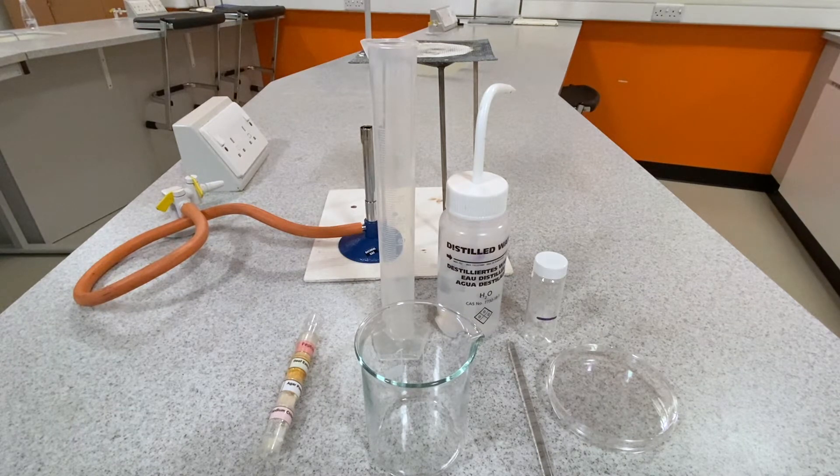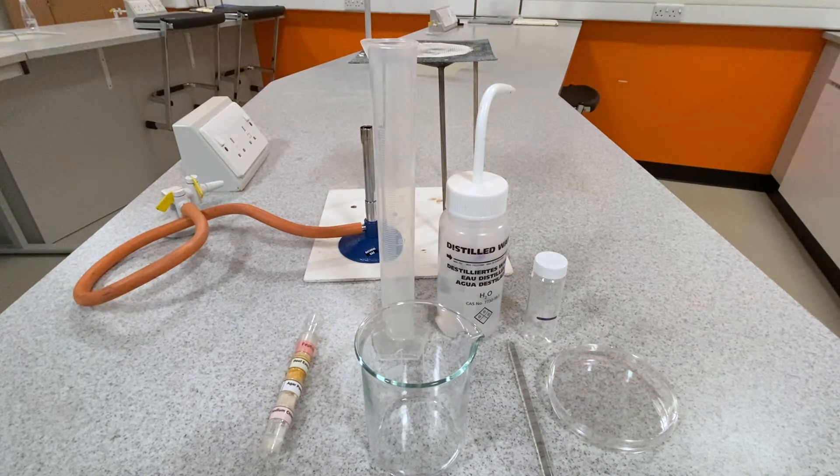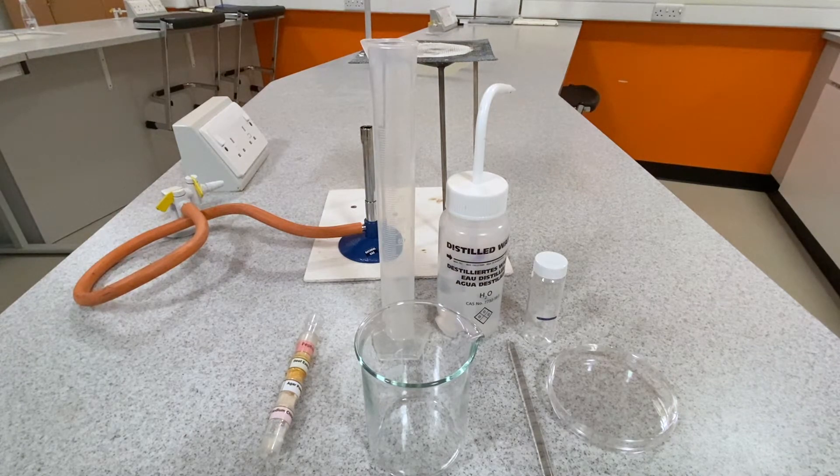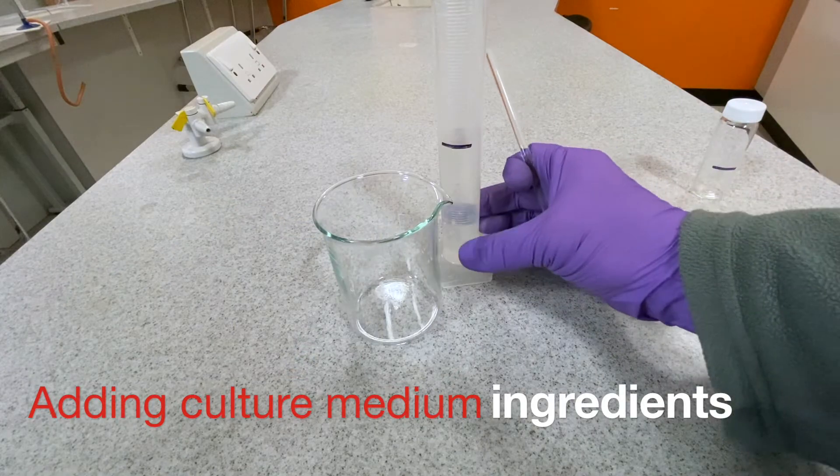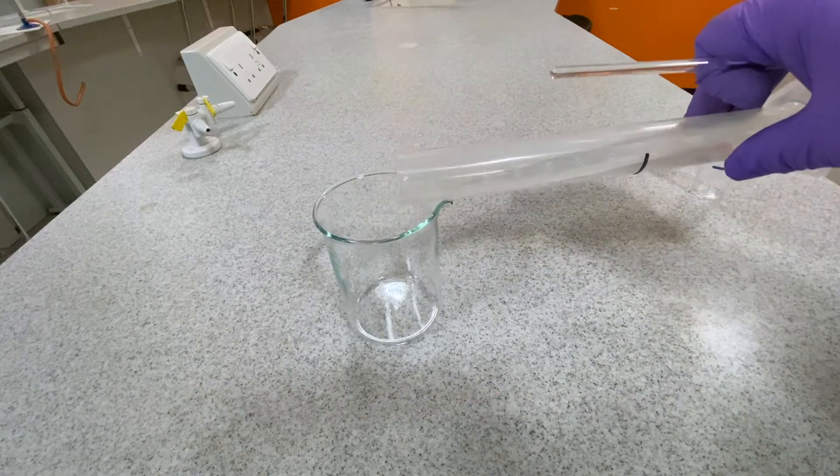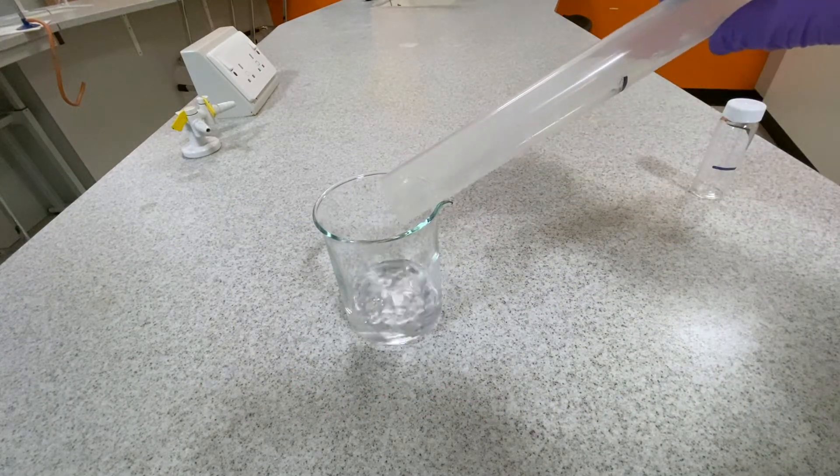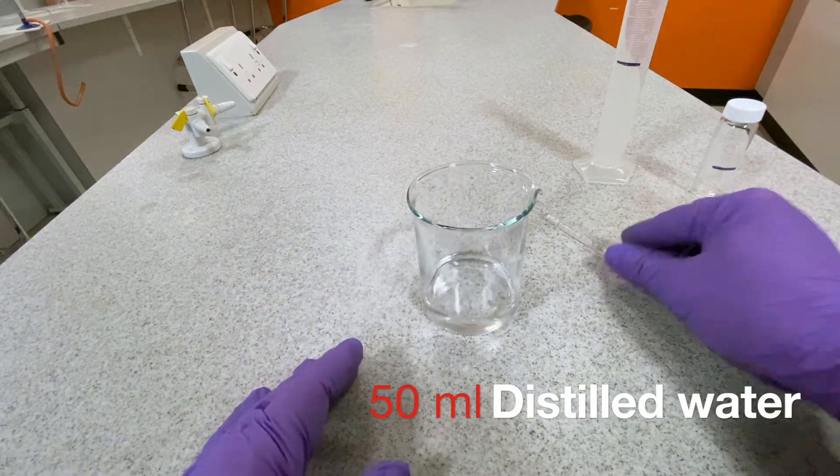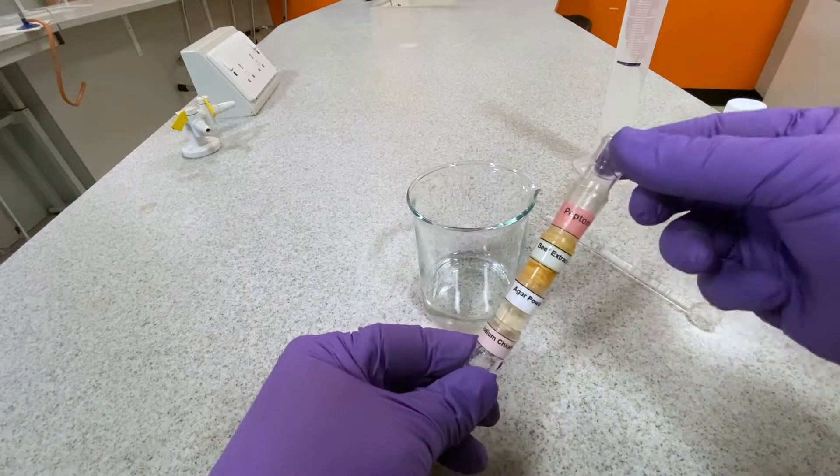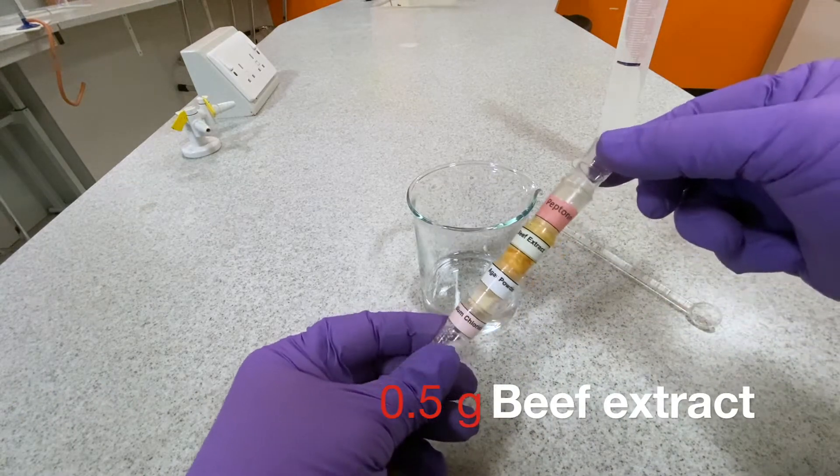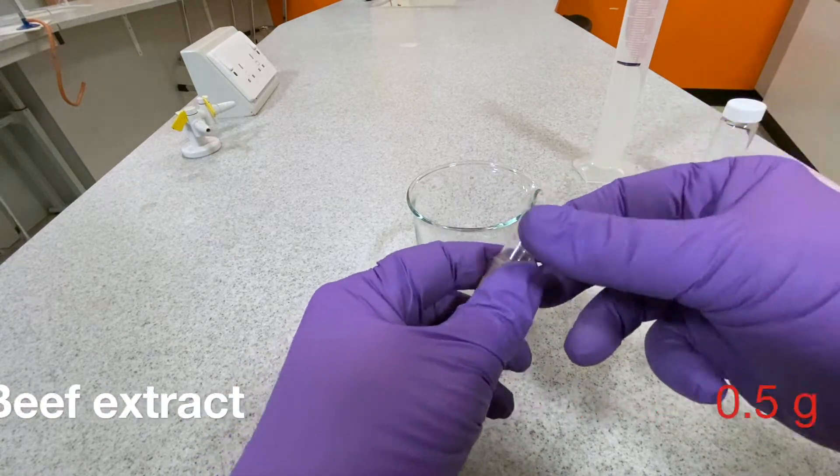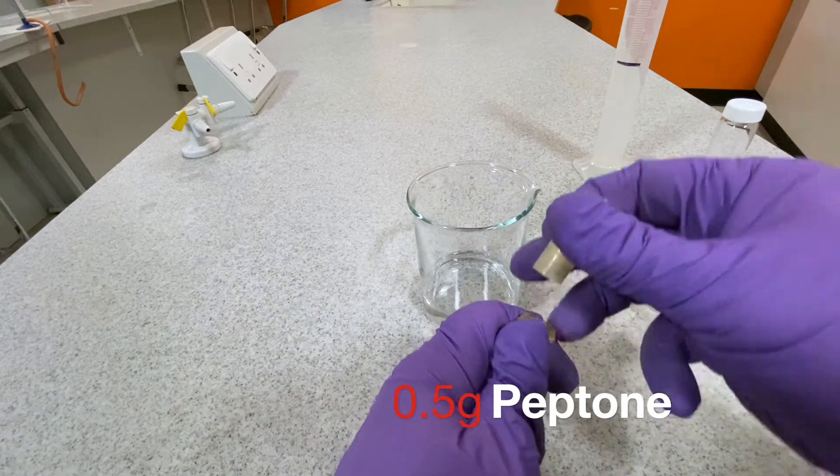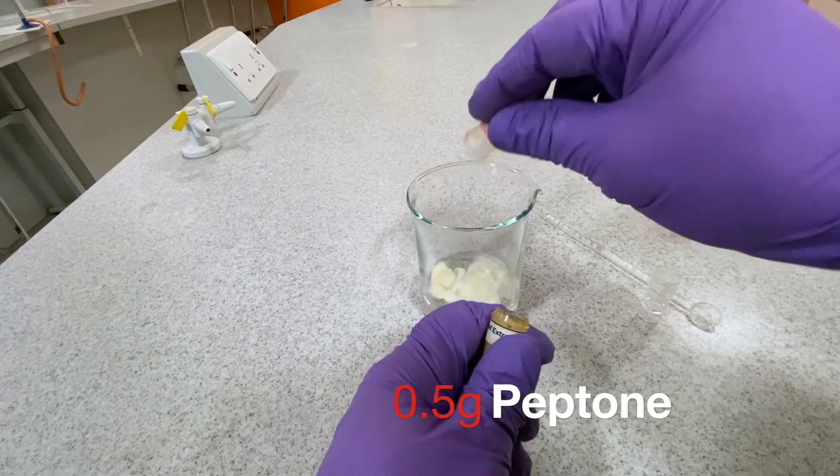Making the culture medium. Measure out 50 milliliters of distilled water into the 100 milliliter measuring cylinder. Pour the water into the 250 milliliter beaker and add the solid ingredients which are pre-weighed in the small pots. The list of ingredients and their weights are shown on screen.